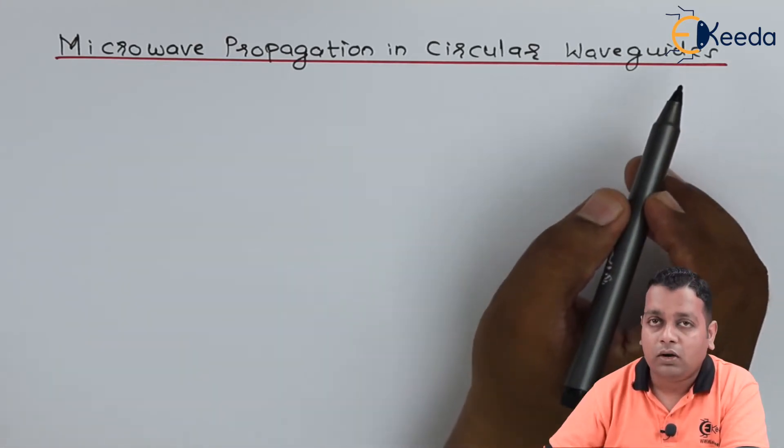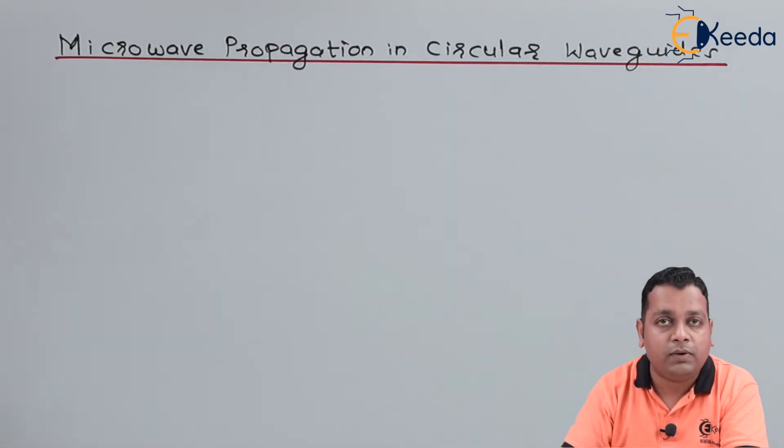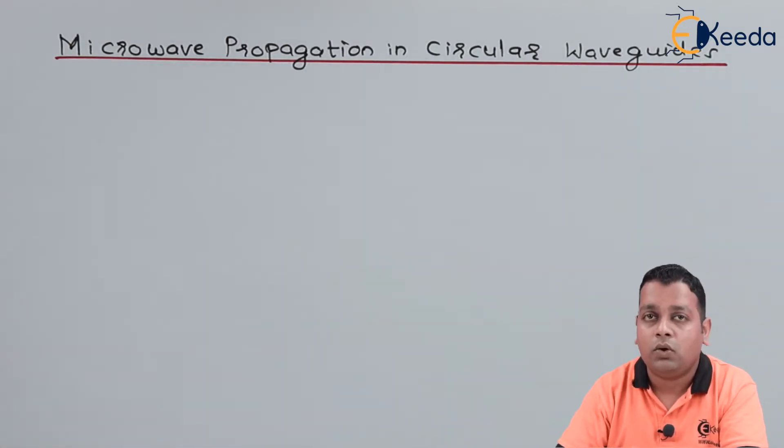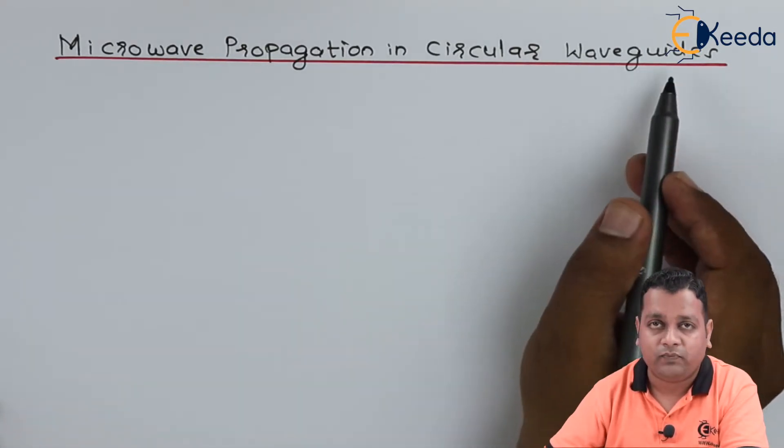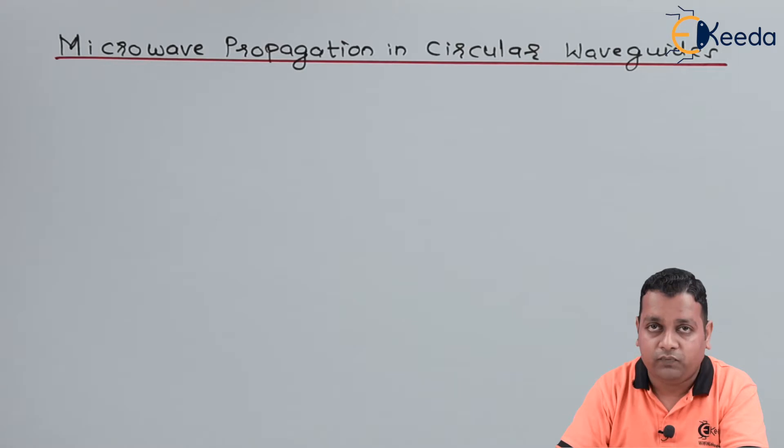We have already gone through the complete analysis and practice with the device rectangular waveguide. So the meaning of waveguide is the same. It is guiding the wave with the help of total internal reflections inside a hollow cavity.